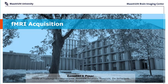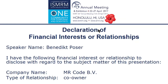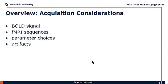Good morning everyone. Thanks for showing up so bright and early. I've seen it as my task here to give a sort of brief overview into fMRI acquisition. It's kind of basic — probably all we can do in 20 minutes — where I'll talk about some of the artifacts and so forth. I'll give a few slides on basic BOLD signal and then go through a bunch of fMRI sequences and considerations, then talk about parameter choices which ultimately relate to the artifacts.